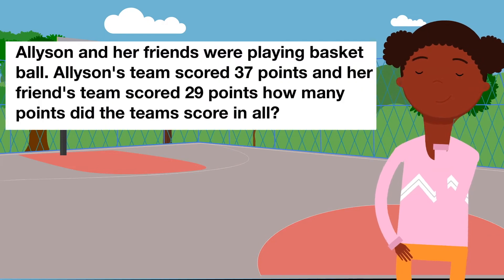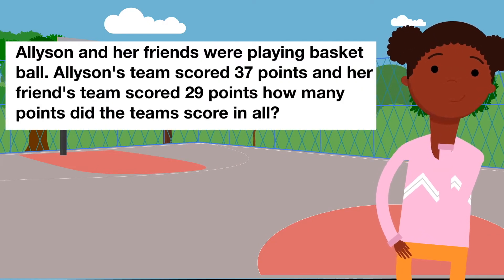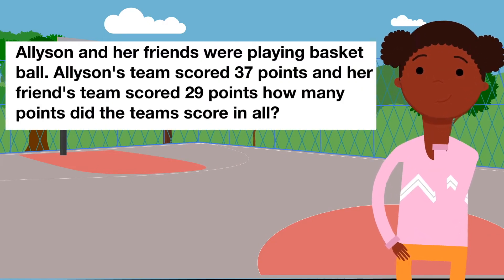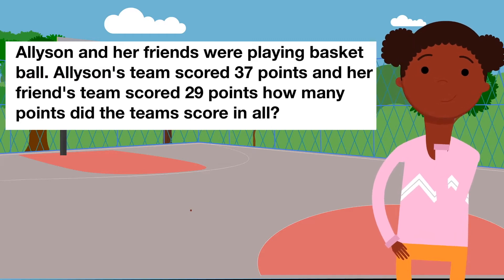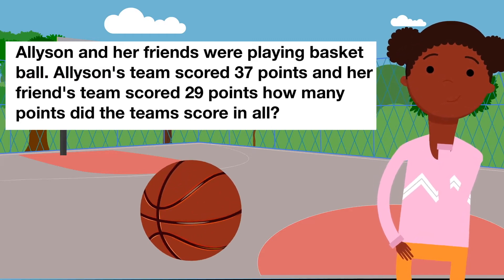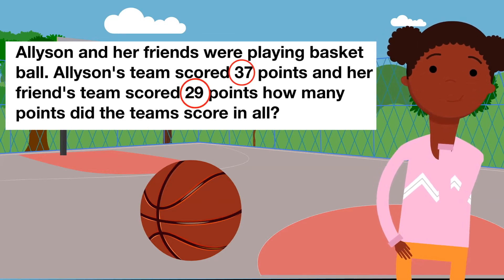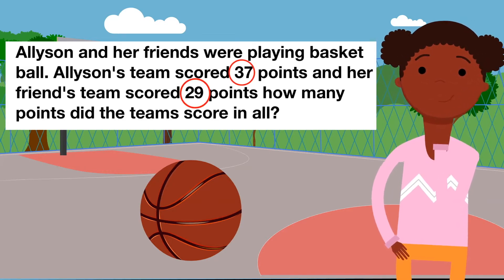Okay, here's the word problem. Let's read it first, and then we'll work it together. Allison and her friends were playing basketball. Allison's team scored 37 points, and her friend's team scored 29 points. How many points did the team score in all?